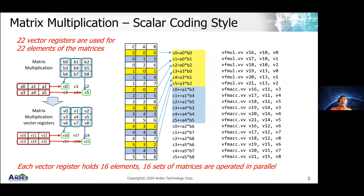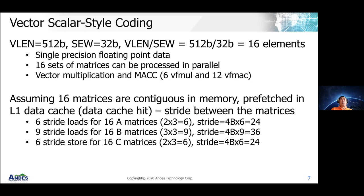This multiplication translates into a table. We start with the yellow multiplication first and then accumulate to get the result. The basic function is to do the FMAC — the floating-point multiply-accumulate — to generate the result. Because V-length is 512 bits and the element width is 32 bits, there are 16 elements, meaning 16 sets of matrices can be processed in parallel. There will be 6 multiplications followed by 12 VFMAC operations.